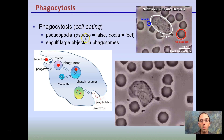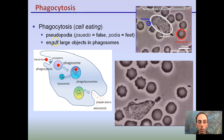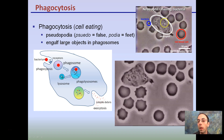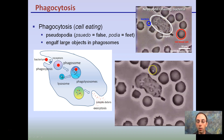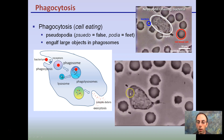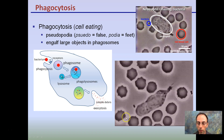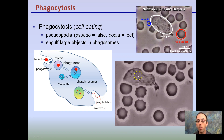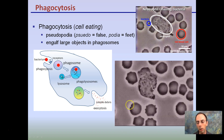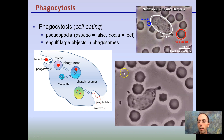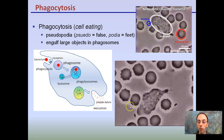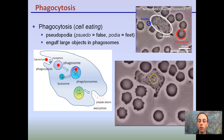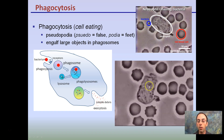Phagocytosis is cell eating — the engulfing of objects. This happens in our immune system quite a bit. Here we have a neutrophil, which is a white blood cell, chasing down and attacking bacteria. It's not eating any of the red blood cells because it's recognizing those as self. It recognizes the small bacteria as an invader, and that's why it's chasing it down and ultimately engulfing it.